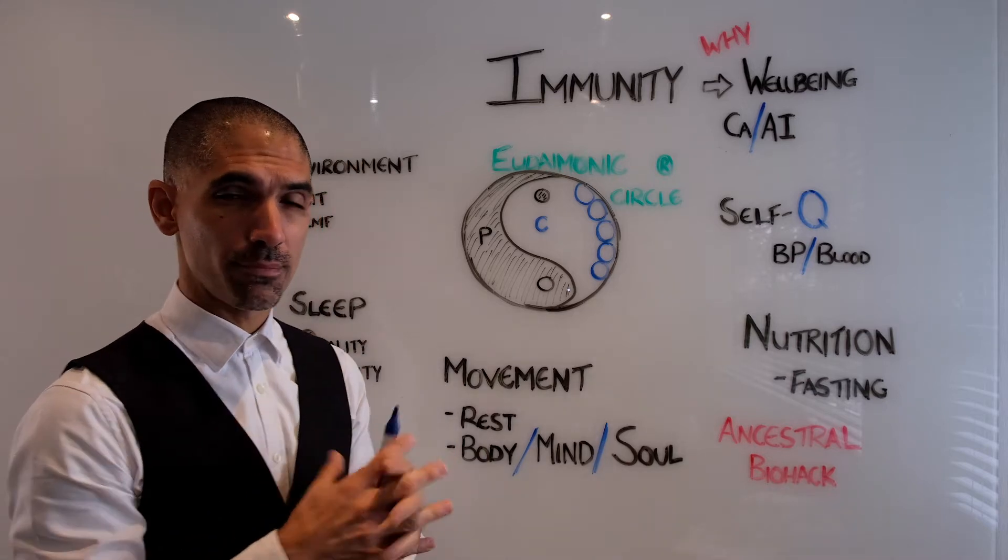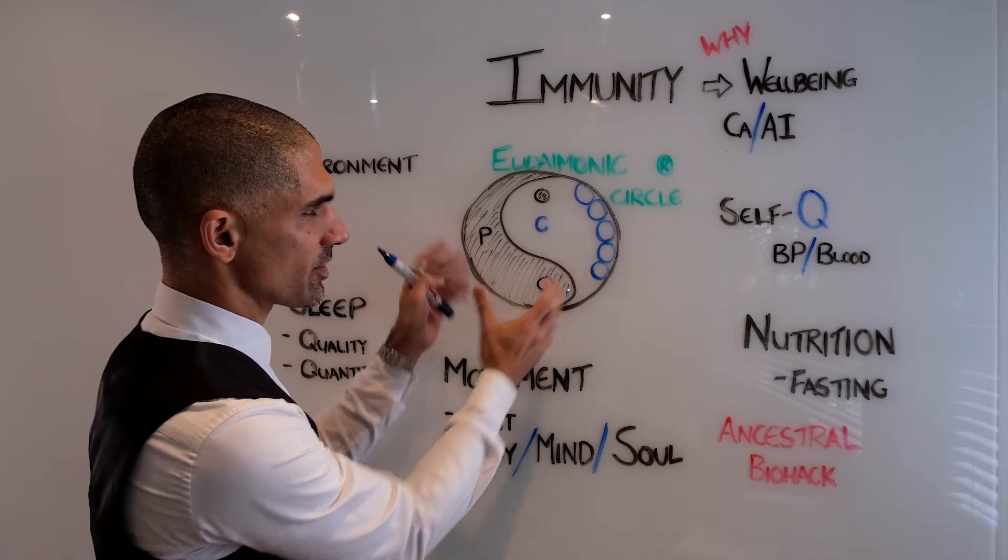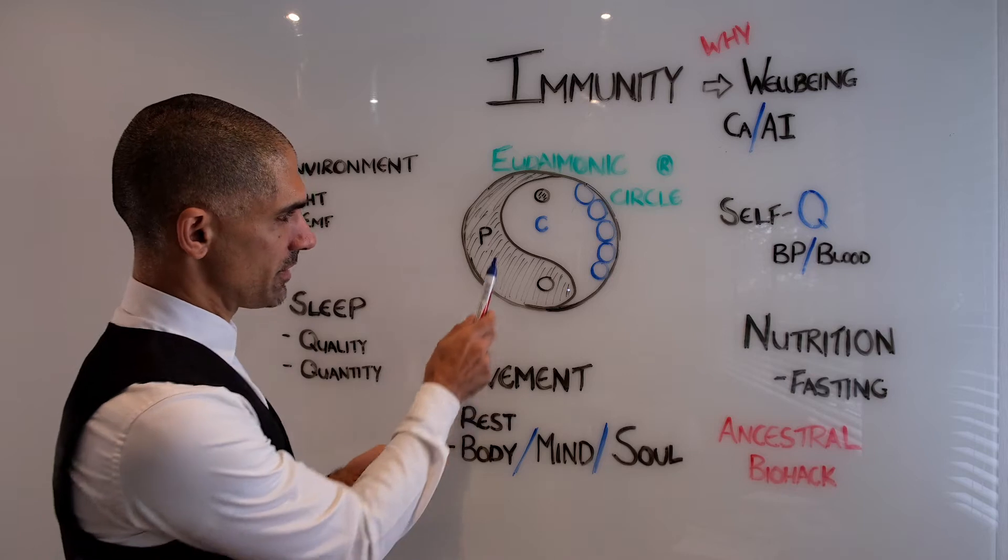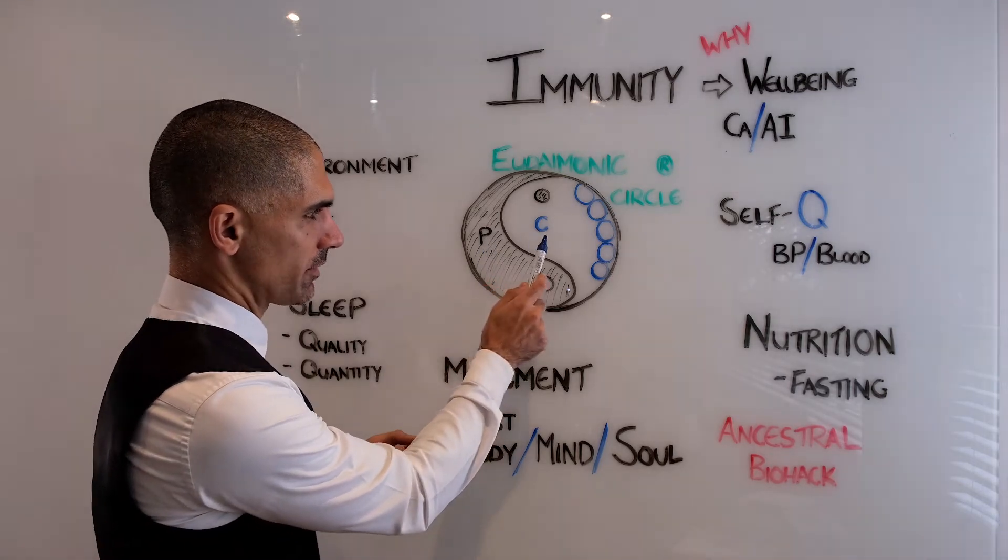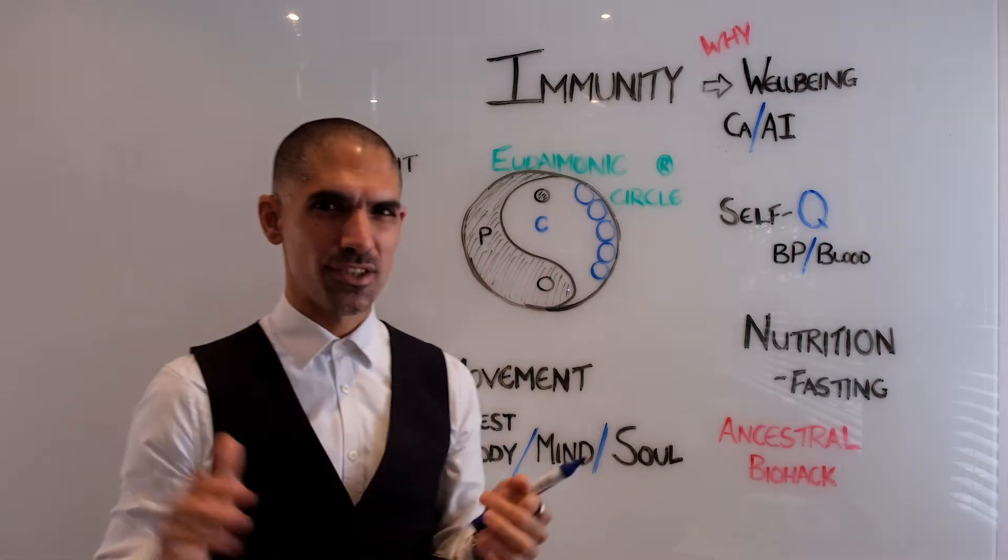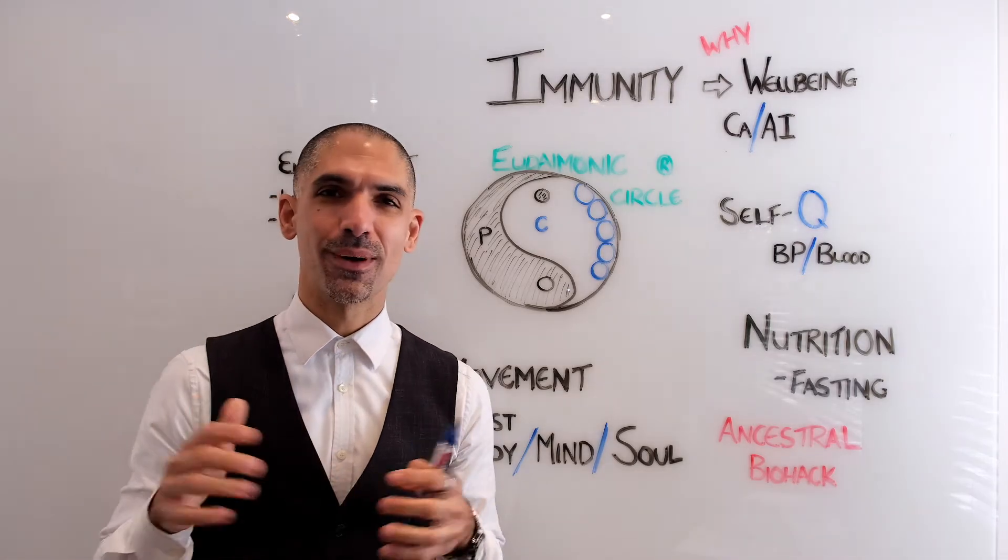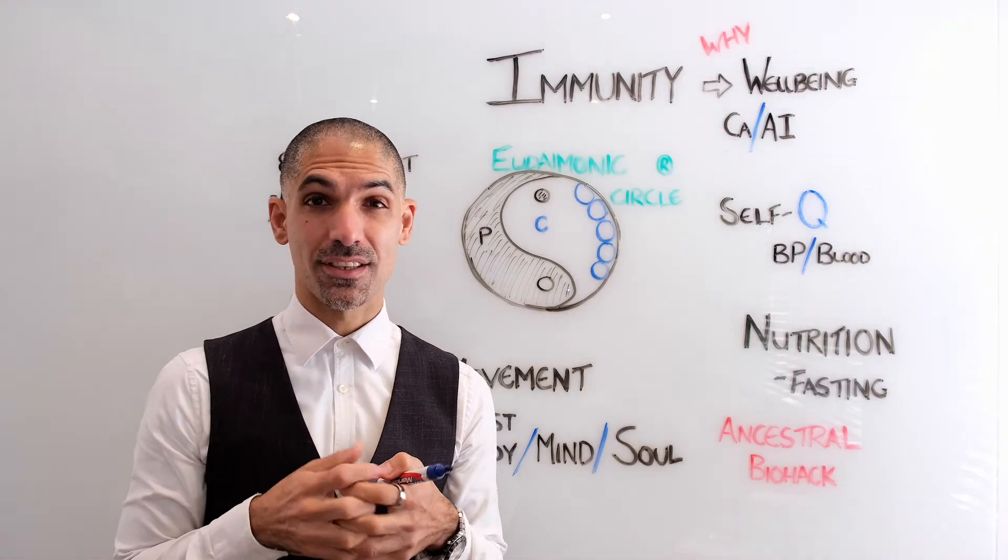At the center of my seven pillars is this eudaimonic circle with the two most important pillars being purpose and community. But what is this eudaimonic circle? Hopefully one day I'm going to have it as a registered trademark.